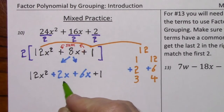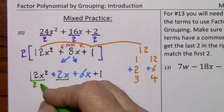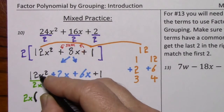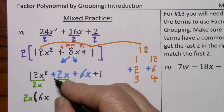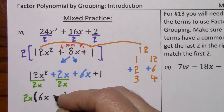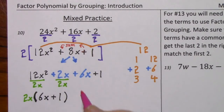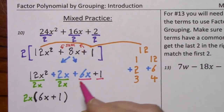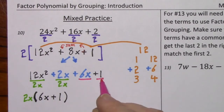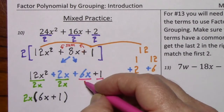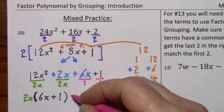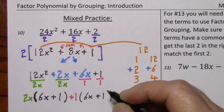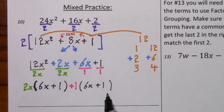Now grouping together the first two, we can factor out a 2x. And that would leave us with 6x. And positive 2x divided by positive 2x is simply b plus 1. Grouping together the last two, the only GCF is 1. So if we look in the parentheses, we have 6x plus 1 — that's exactly what we have here. So we're just going to factor out a positive 1 from each term, and we're left with 6x plus 1. So we're going to factor out 6x plus 1 from each.